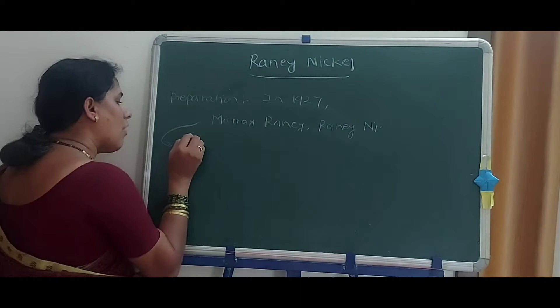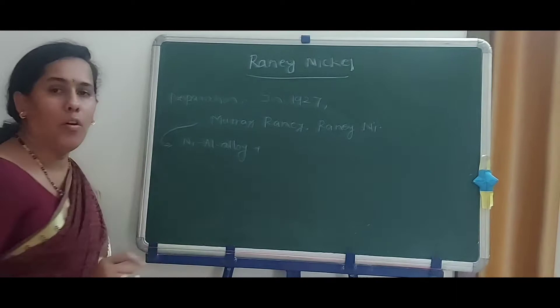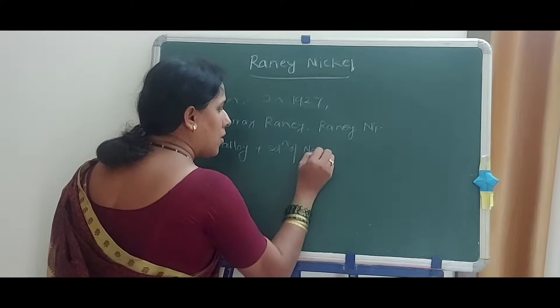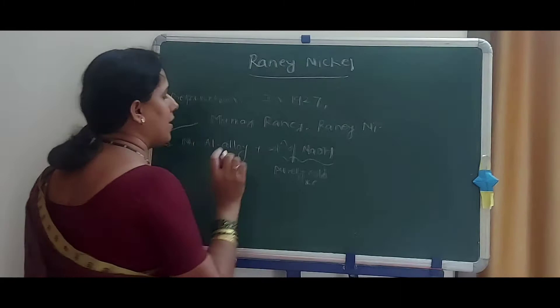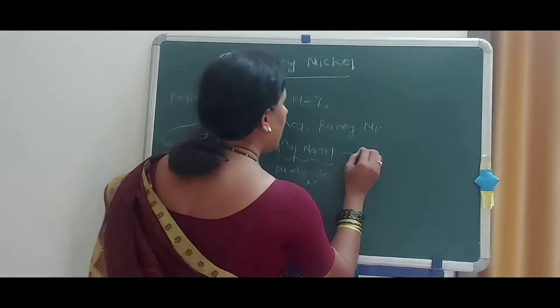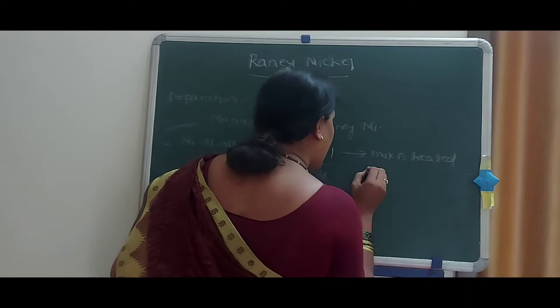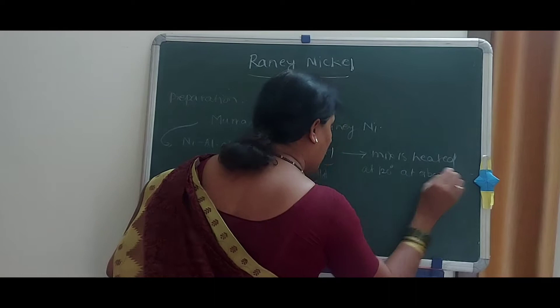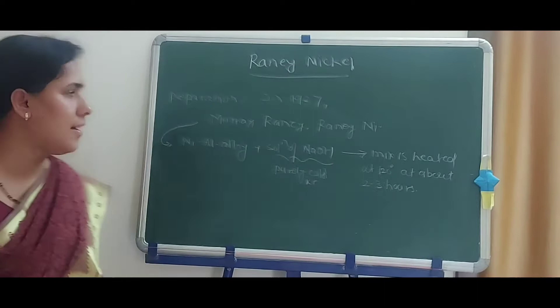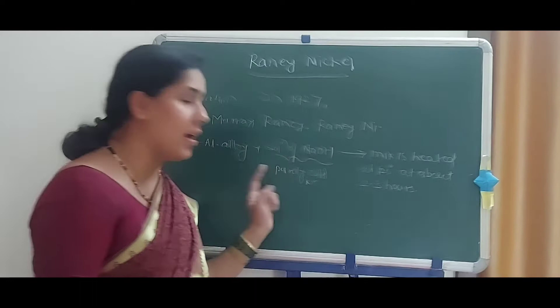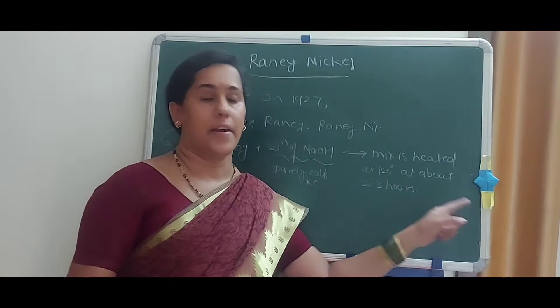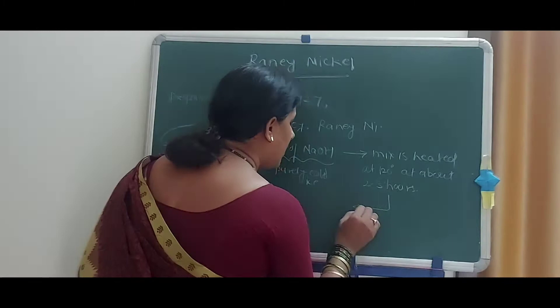First, to the alloy of nickel-aluminium, he added a solution of NaOH — a purely ice-cold solution of NaOH. This is added to nickel-aluminium alloy, and the mixture is heated at 120 degree Celsius for about 2 to 3 hours.